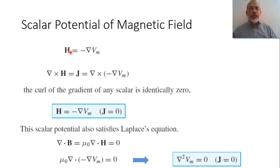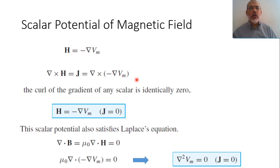Assuming that the magnetic field is represented as minus the gradient of the scalar potential Vm, then curl H = J, which is Ampere's law. In this case H can be replaced by -grad(Vm). From the mathematics of the curl and gradient operations, it is known that the curl of any gradient is zero. So this representation is valid only in any region where J equals zero.